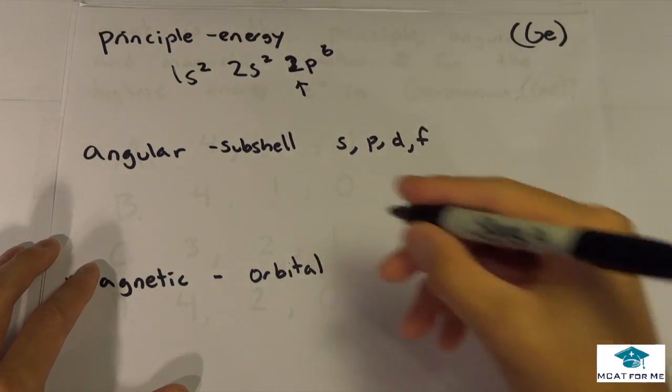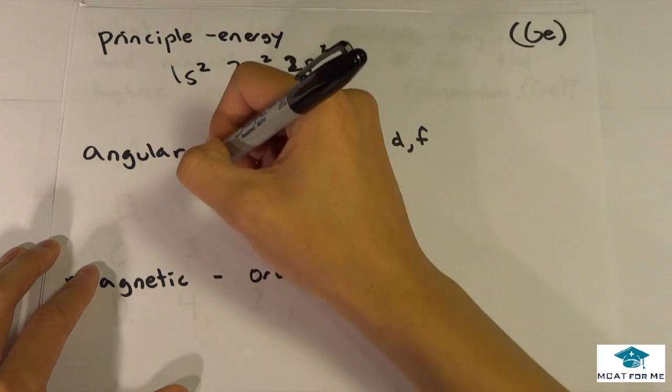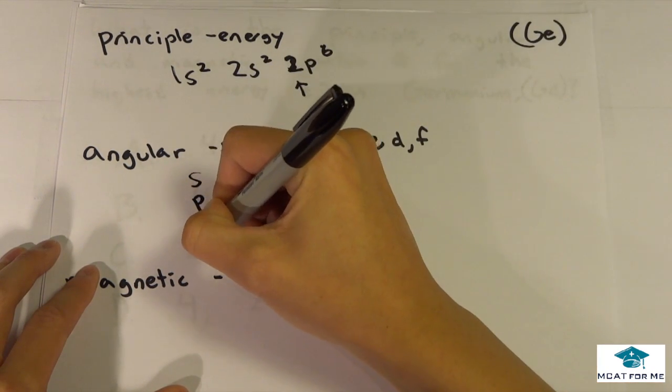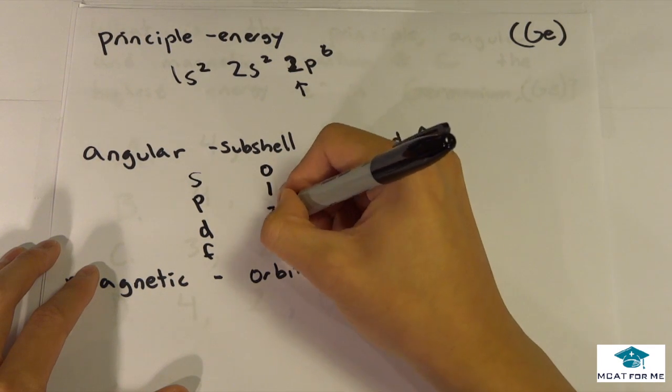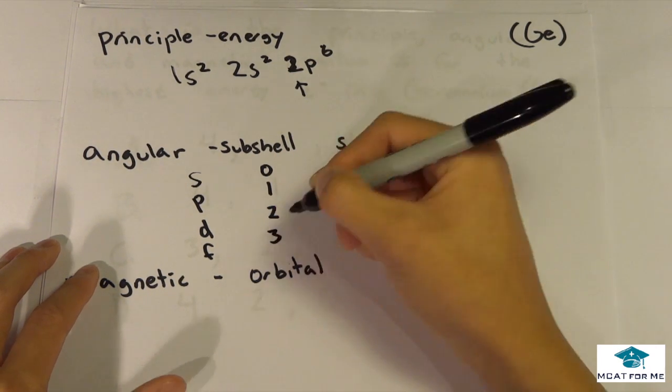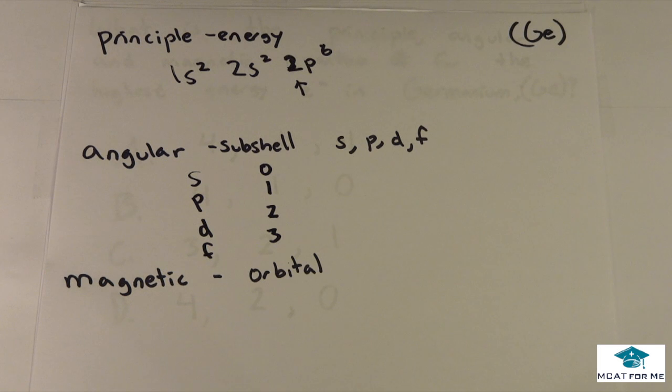So those are s, p, d, and f, and we have to define the numbers. s has an angular quantum number of 0, p is 1, d has 2, and f has 3. So that's what you have to remember: 0, 1, 2, and 3.